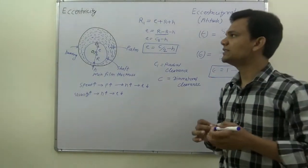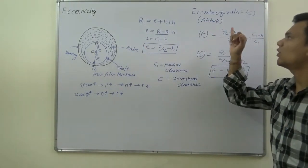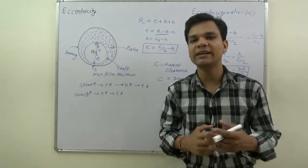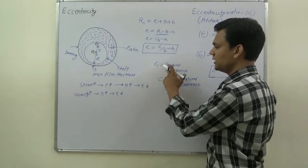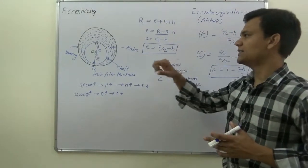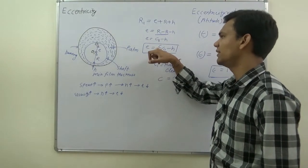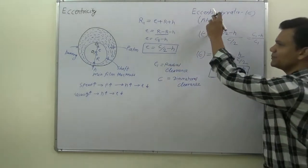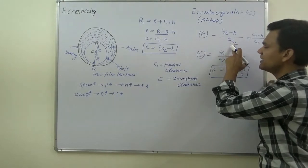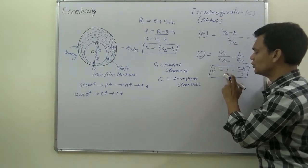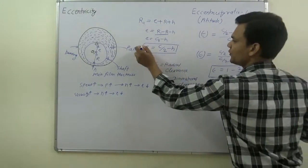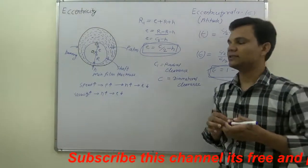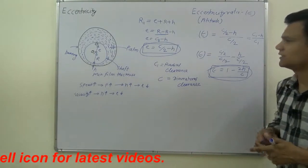In today's lecture, we discussed eccentricity and eccentricity ratio, also known as attitude. Eccentricity depends upon the speed of the shaft, load on the shaft, viscosity of lubricant, and temperature of the lubricant. C1 is radial clearance and C is diametral clearance. The formula for eccentricity is C by 2 minus H, where H is minimum film thickness. The eccentricity ratio is defined as the ratio of eccentricity to the radial clearance, and equals 1 minus 2H by C. Today we calculated two formulas: one for eccentricity and one for eccentricity ratio.